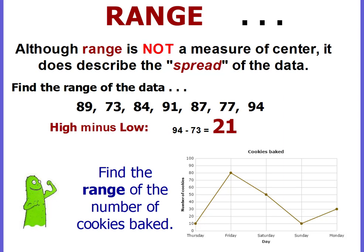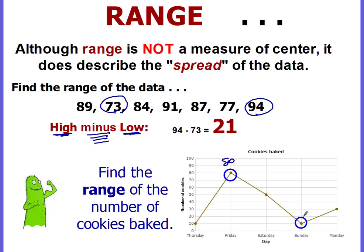Now let's talk about range. Although range is not a measure of the center, it does describe the spread of the data. To find the range, you take the highest number minus the lowest number. In this data set, the highest number is 94 and the lowest is 73, so you subtract: 94 minus 73 is 21. The range would be 21. You can do the same thing from a graph — the highest would be 80, the lowest would be Sunday at 10, and 80 minus 10 equals 70. That is the range. And that's all there is to know about measures of center.